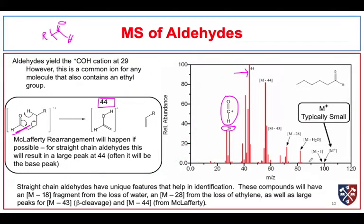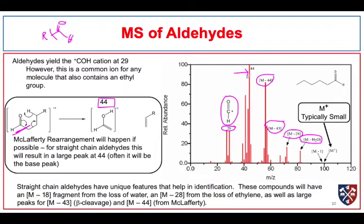Other peaks commonly seen with aldehydes include an M−18 peak due to loss of water and an M−28 peak due to loss of ethylene. We also see large peaks at M−43 and M−44 due to beta cleavage and McLafferty rearrangements. So if we think we have a straight-chain aldehyde, we look for a peak at 44, the peak at 29, and peaks at M−18, M−28, M−43, and M−44 — all indicative of aldehydes in the mass spectrum.